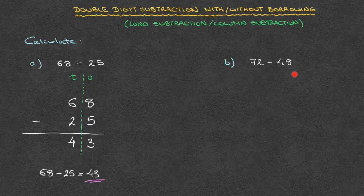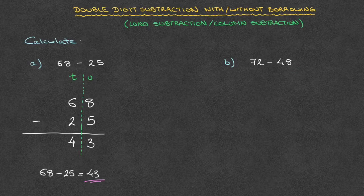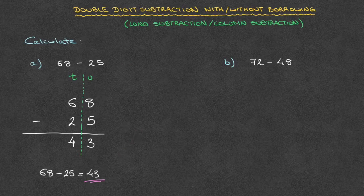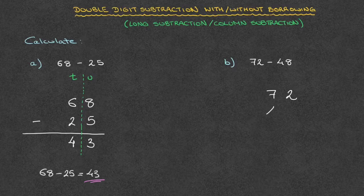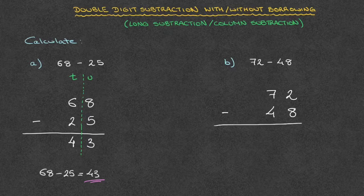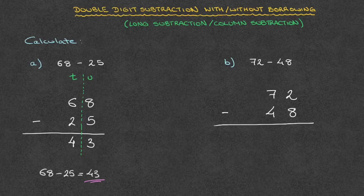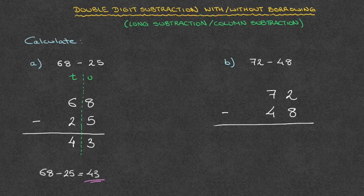Now let's look at the second example. We have to calculate 72 minus 48. To get started, we rewrite this in exactly the same way that we rewrote the first example. We write this as 72, and we write 48 directly beneath that. Since we're subtracting, we write a minus symbol here and underline all of that. The next thing I do is split the units and the tens with a dotted line, like this.